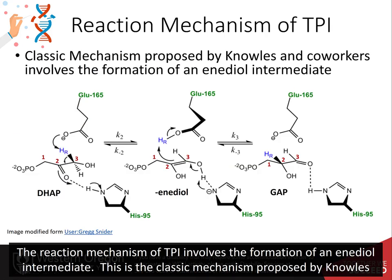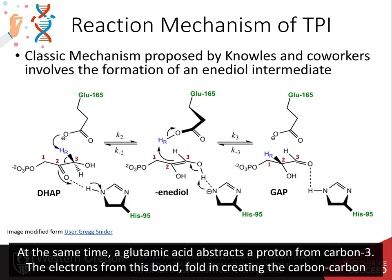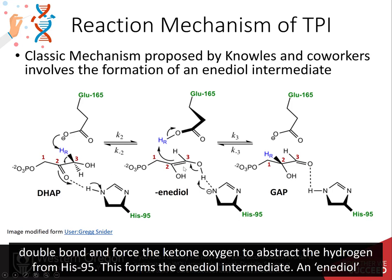The reaction mechanism of TPI involves the formation of an enediol intermediate. This is the classic mechanism proposed by Knowles and his co-workers. In this reaction, a histidine residue from TPI hydrogen bonds with the ketone functional group from DHAP. At the same time, a glutamic acid abstracts a proton from the carbon-hydrogen bond at carbon-3. The electrons from this bond fold in, creating a carbon-carbon double bond and forcing the ketone oxygen to abstract the hydrogen from histidine 95. This forms the enediol intermediate.